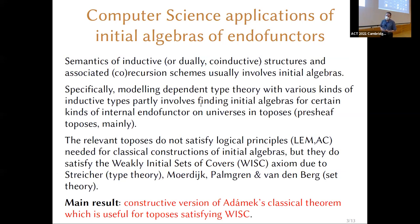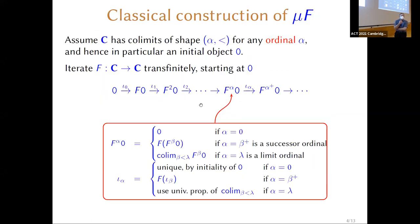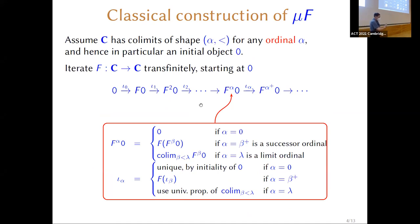One can give a constructive version of one of the classical ways of constructing initial algebras — due to Jiří Adámek — which works not in an arbitrary topos but in a topos satisfying this weak form of choice called WISC. The aim of the talk is to sketch what's involved in that result. Let's start by recalling Adámek's theorem about initial algebras in classical mathematics. Not every functor on the category of sets has an initial algebra — the power set functor doesn't — but if one exists, one way to get it is to iterate the functor.